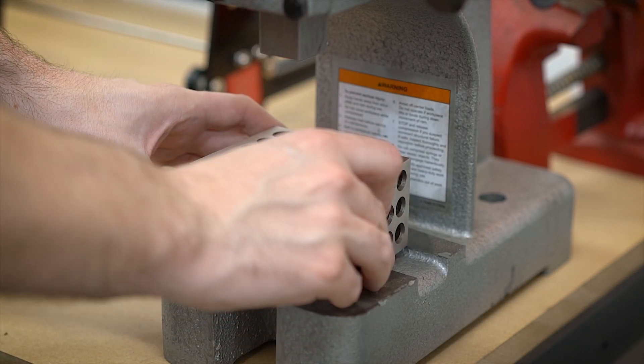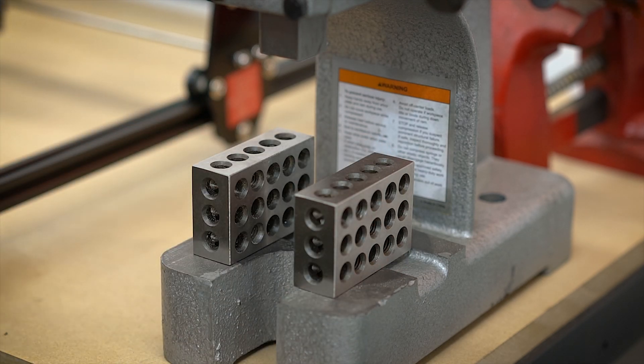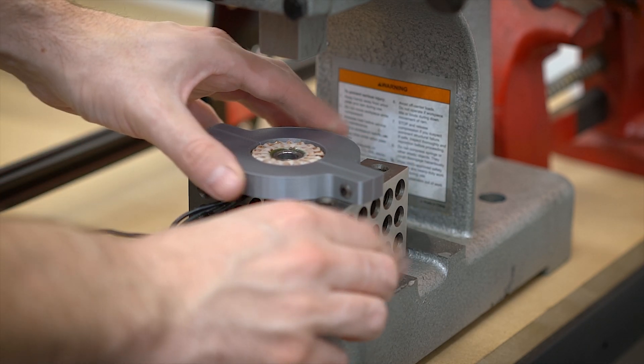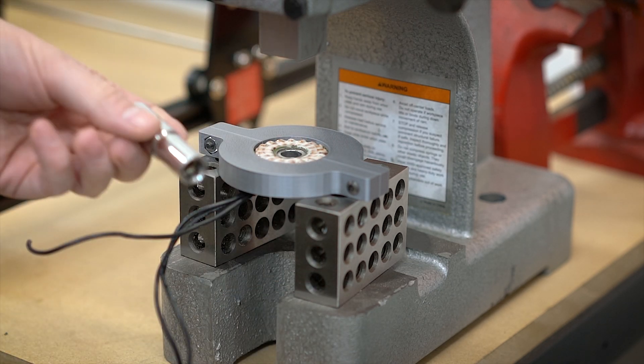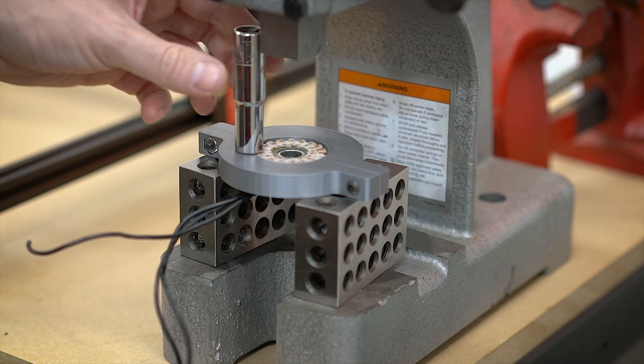So now it's time to bring everything over to the trusty arbor press. If you don't have an arbor press yet you should definitely look at getting one. They're 50-60 bucks and you can get one at Harbor Freight pretty readily or you can look on Craigslist.